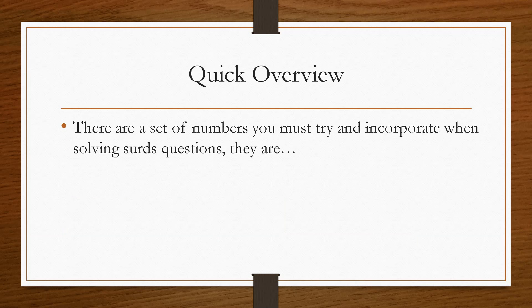And there are a set of numbers that we must try and incorporate into solving the surds. So if we know these set of numbers, which I'm sure you'll realize are the numbers that all have complete square roots. So for example, square root of 9 is 3, square root of 25 is 5 and so on. So these are the values that we're going to refer to in every single surd question.